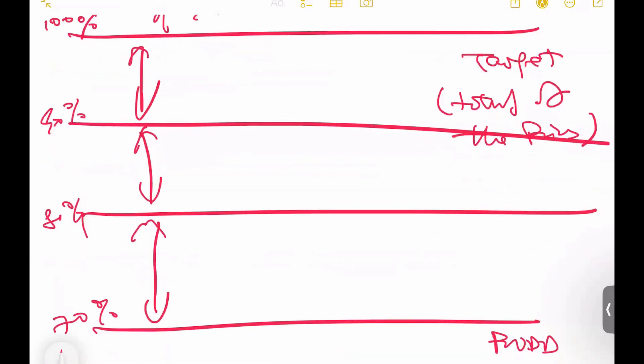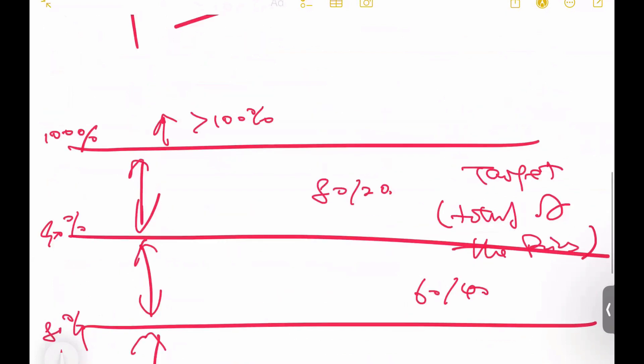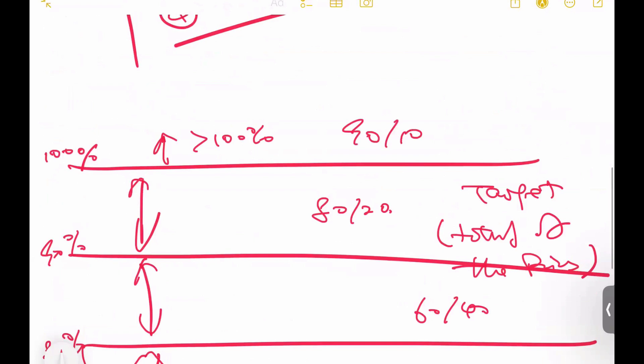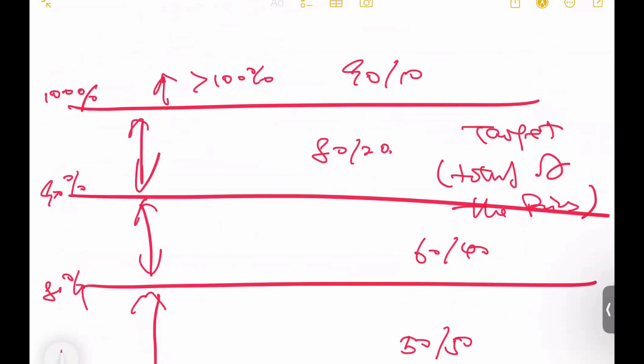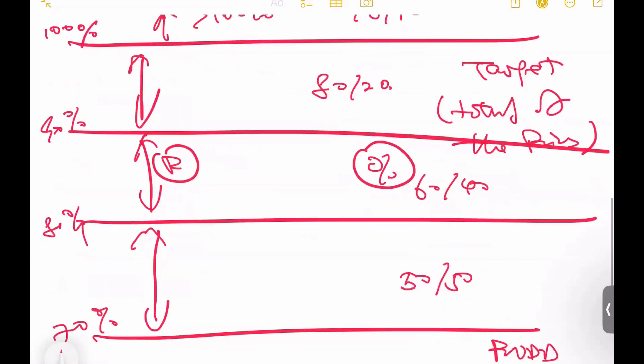Then for each share range, you have one share percentage. Let's say from 70% to 80%, you share 50-50, for example. Then 80% to 90%, you share 60-40. Then 90% to 100%, you share 80-20, for example. And then more than 100%, for example, 90-10. In the contract data, you may specify whether that 90% belongs to the contractor or belongs to the client. We have multiple share ranges and multiple share percentages. The R here is the range. The percentage symbol here is the share percentage.